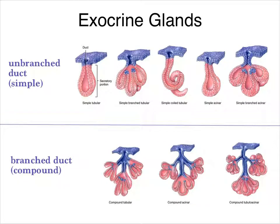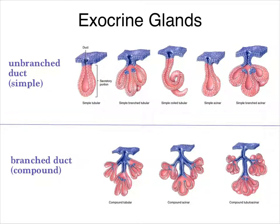These tubular glands that look like long projections can either be straight — going basically in one direction — or they can be coiled, where they go back and forth, down a bit, up a bit, then back down, with multiple coils within them. So this is a simple coiled tubular gland.